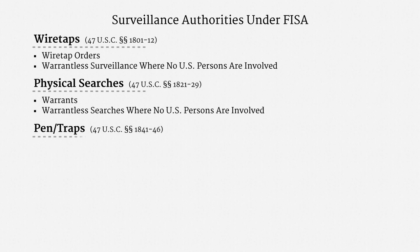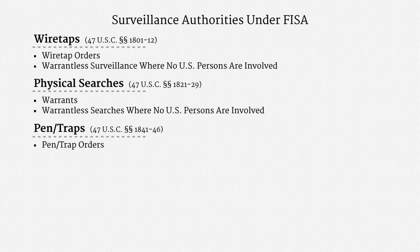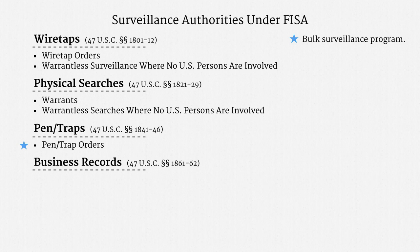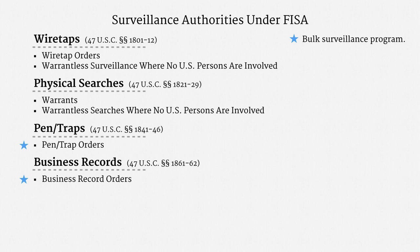The third part of FISA addresses pen registers and trap-and-trace devices. The text sets out FISA pen-trap orders, borrowing substantially from ECPA's pen-trap provisions. I'm going to put a little star next to this one, to highlight that it was the basis for a bulk surveillance program. Next up is the part of FISA that covers business records. It introduces a new type of court order, the FISA business records order — that gets a bulk surveillance star too.